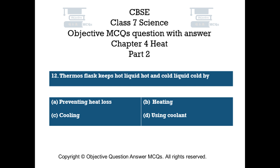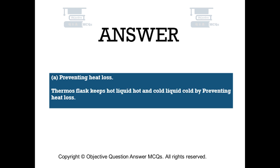Question number 12. A thermos flask keeps hot liquid hot and cold liquid cold by — Option A: preventing heat loss, Option B: heating, Option C: cooling, Option D: using coolant. The right answer is Option A — Preventing heat loss. A thermos flask keeps hot liquid hot and cold liquid cold by preventing heat loss.